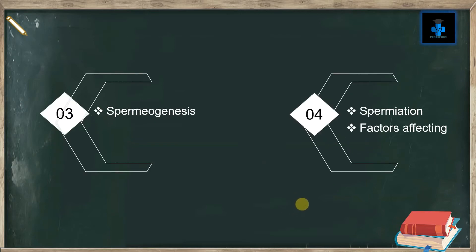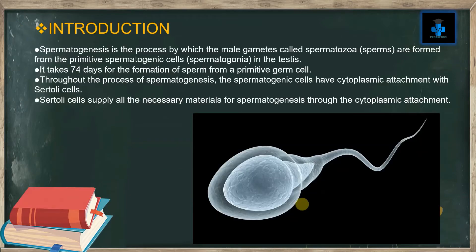Spermatogenesis is the process by which the male gametes called spermatozoa or sperms are formed from the primitive spermatogenic cells or spermatogonia in the testis. It takes 74 days for the formation of sperm from a primitive germ cell. Throughout the process of spermatogenesis, the spermatogonic cells have cytoplasmic attachment with Sertoli cells.